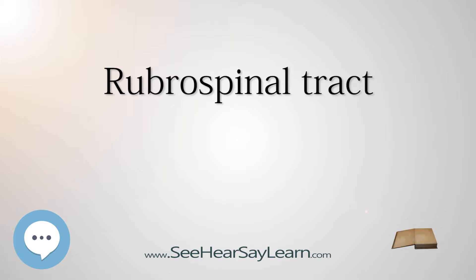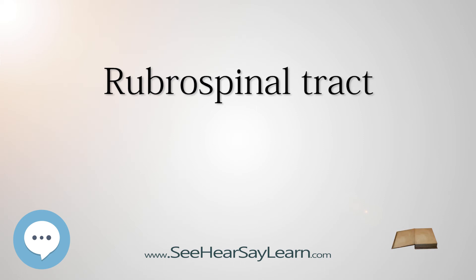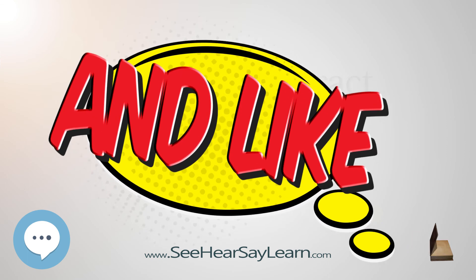The tract terminates primarily in the cervical spinal cord, suggesting it functions in upper limb but not lower limb control. It primarily facilitates flexion in the upper extremities (see decorticate posture) and is small and rudimentary in humans. In some other primates, however, experiments have shown that over time the rubrospinal tract can assume almost all the duties of the corticospinal tract when the corticospinal tract is lesioned.